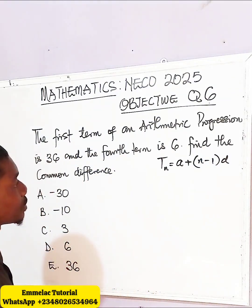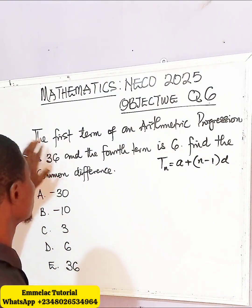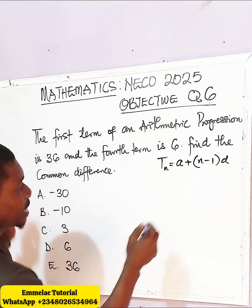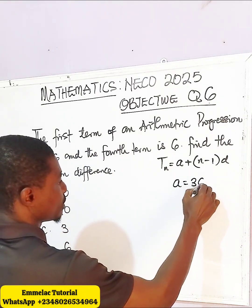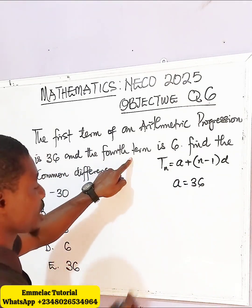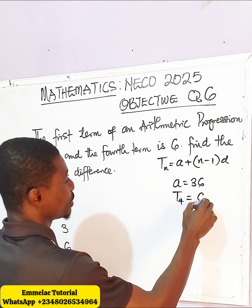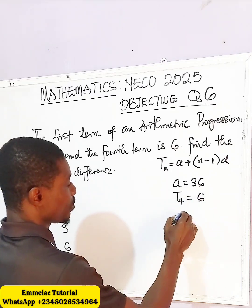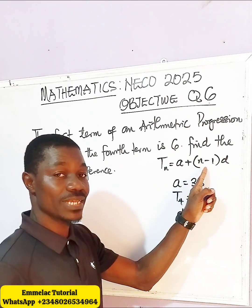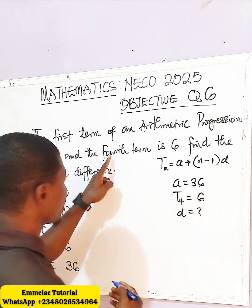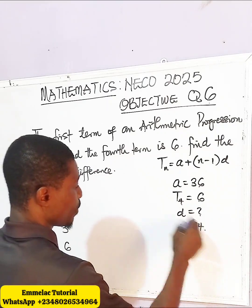Let us now write out all that is needed in the question. The first term, A, equals 36, and the fourth term, T4, equals 6. We are looking for D. The N here is the number of the term, which is the fourth, so N equals 4.